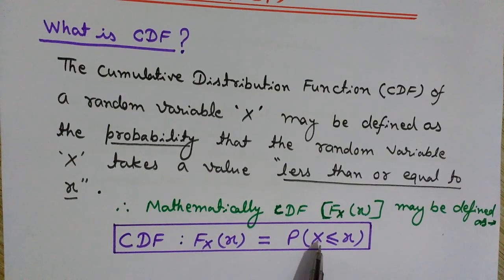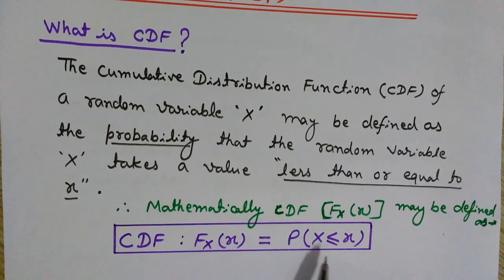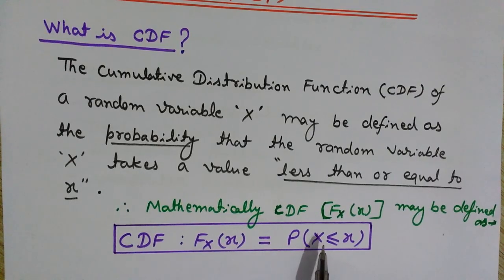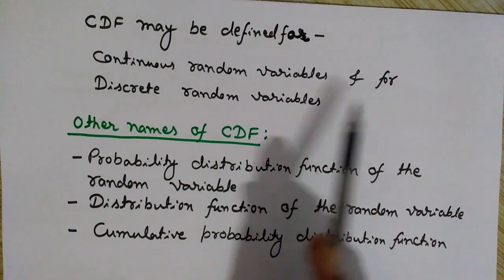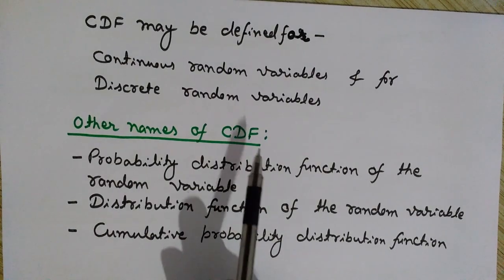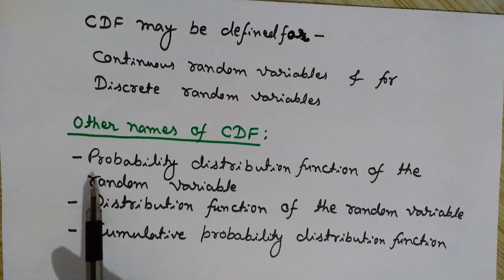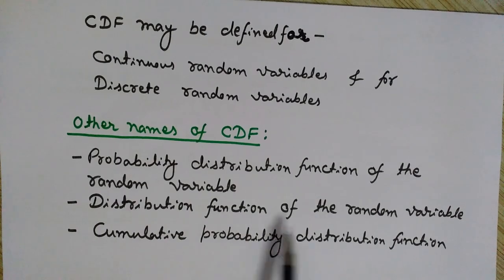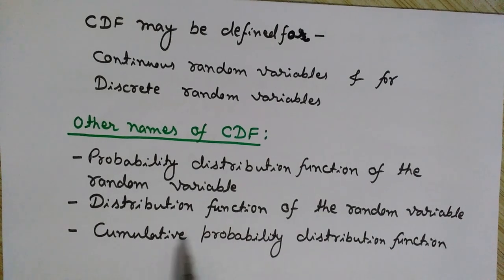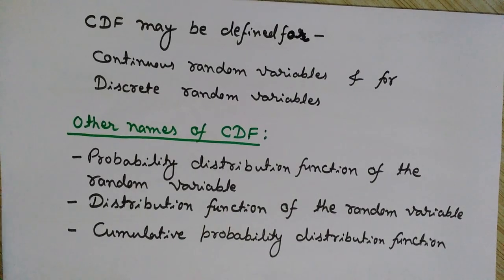Capital X is the random variable that takes on some values from the sample space. For example in our coin-tossing scenario, the CDF gives the probability that the number of tails would be less than some value. We can define this CDF for both continuous and discrete random variables. Other names for CDF include: probability distribution function, distribution function, and cumulative probability distribution function.